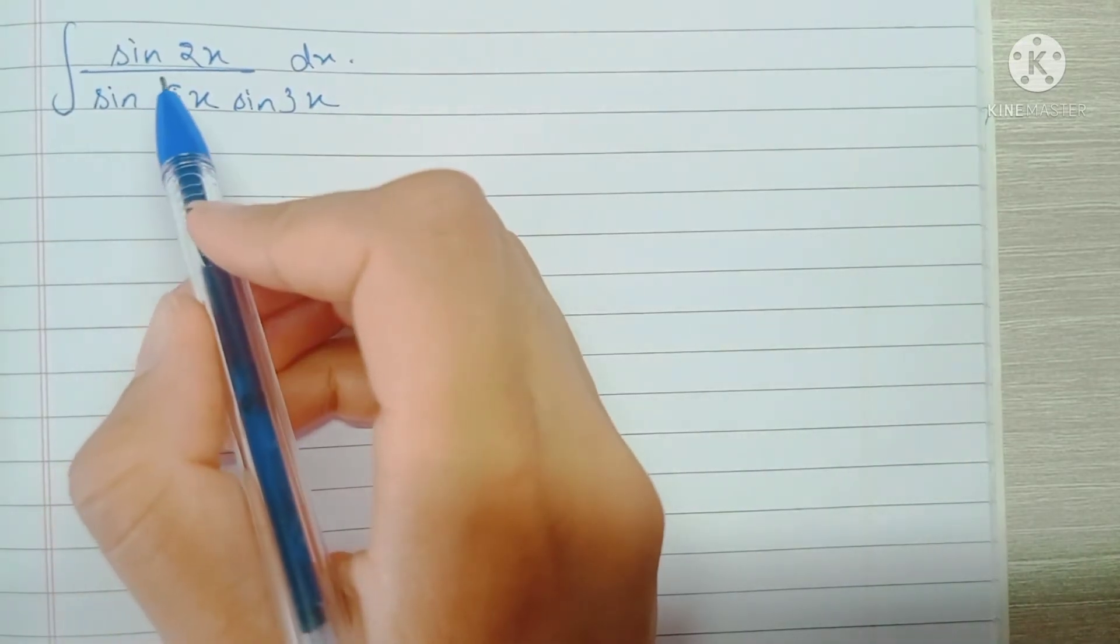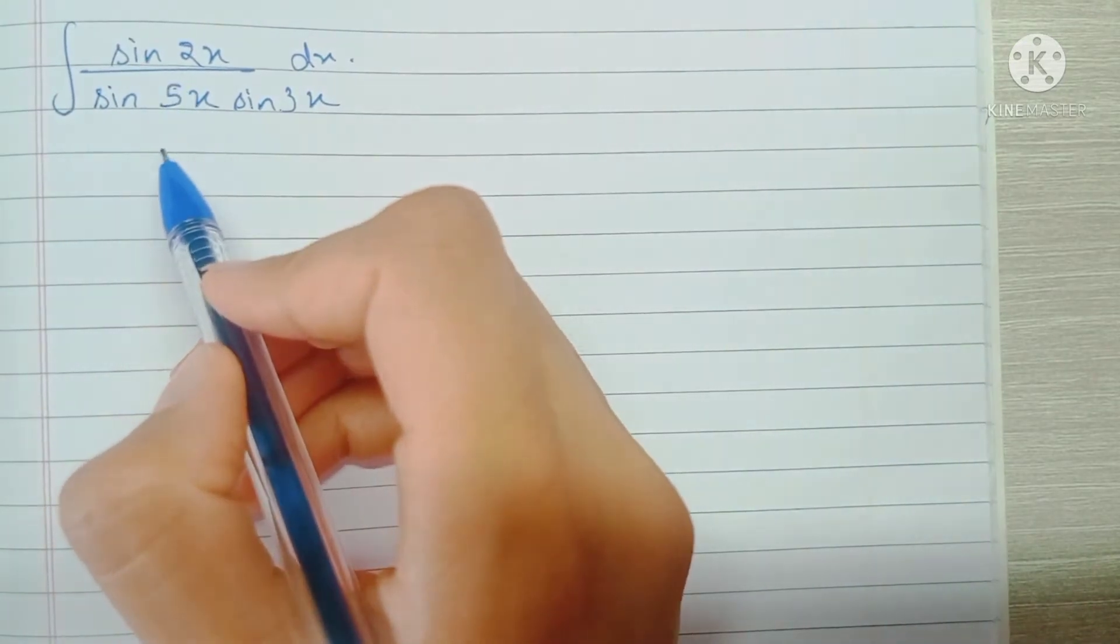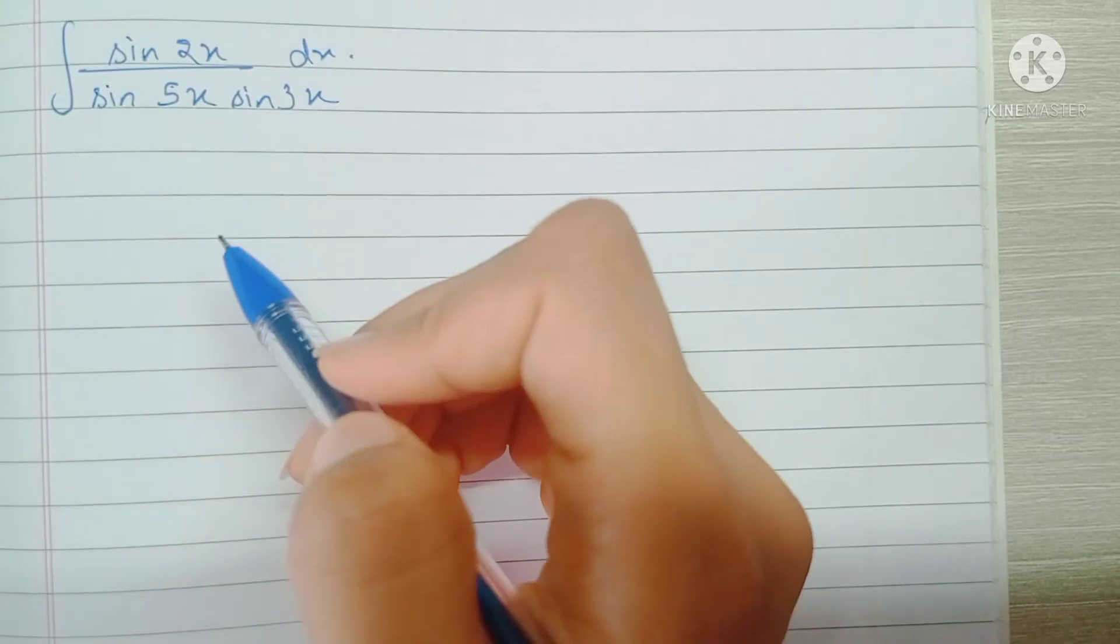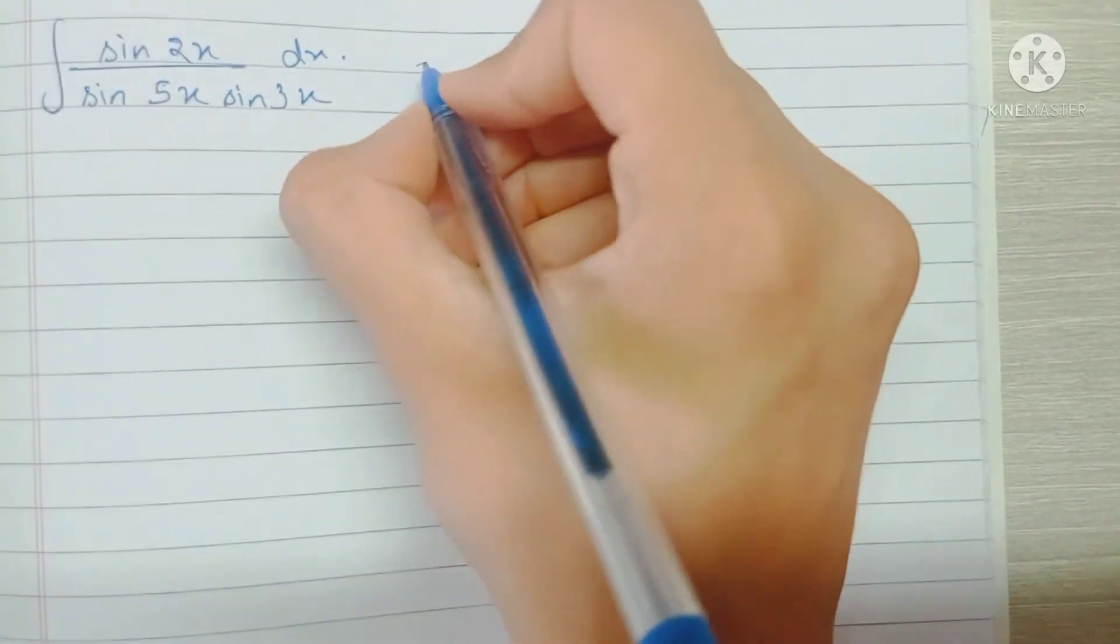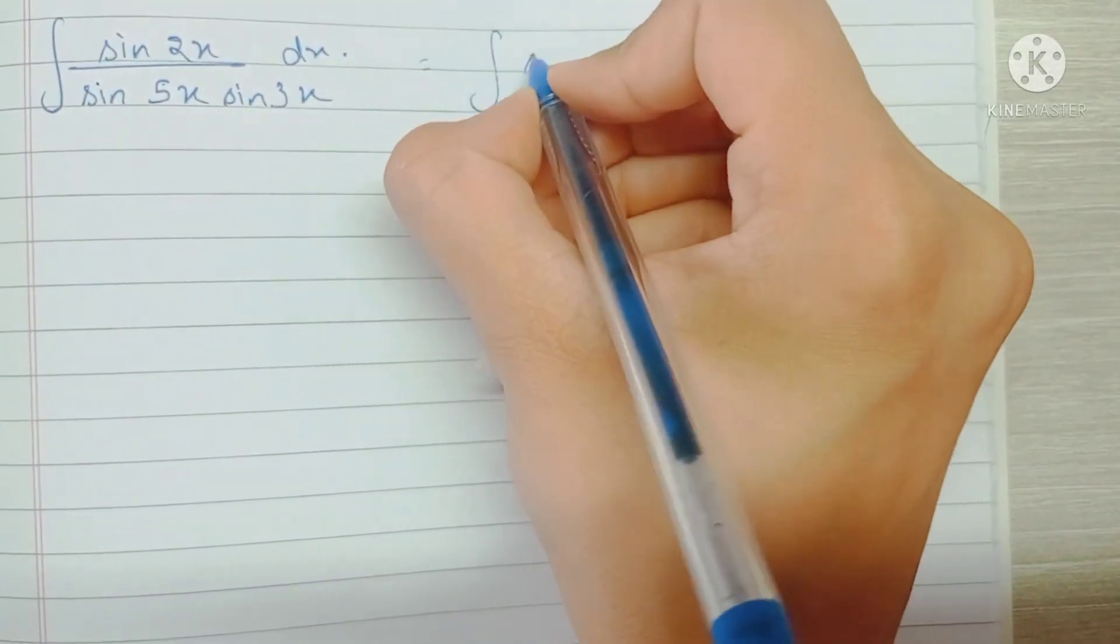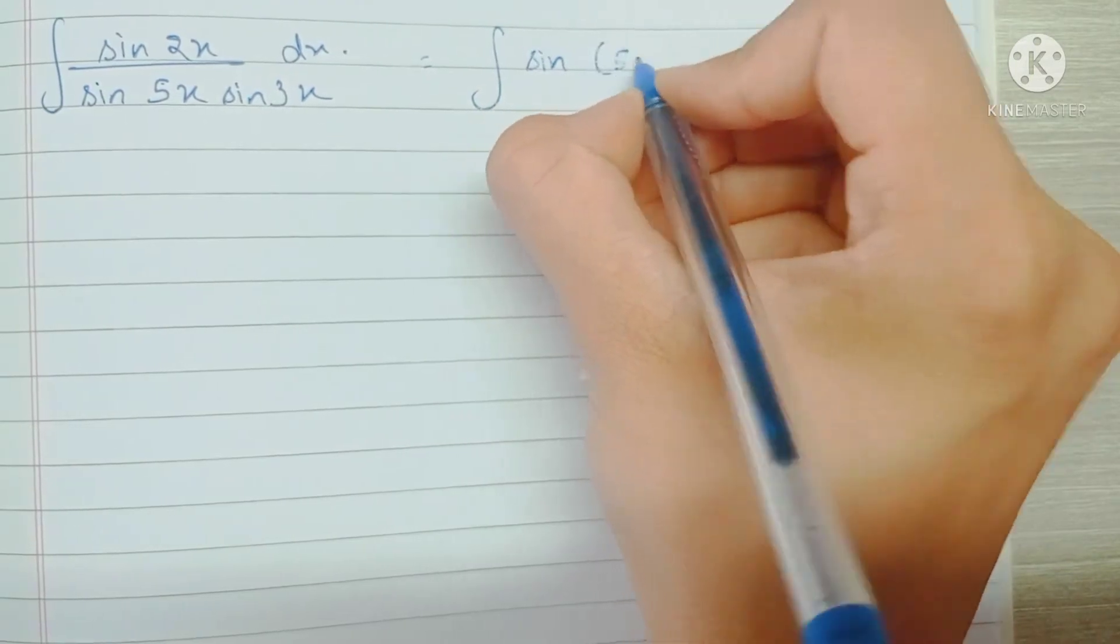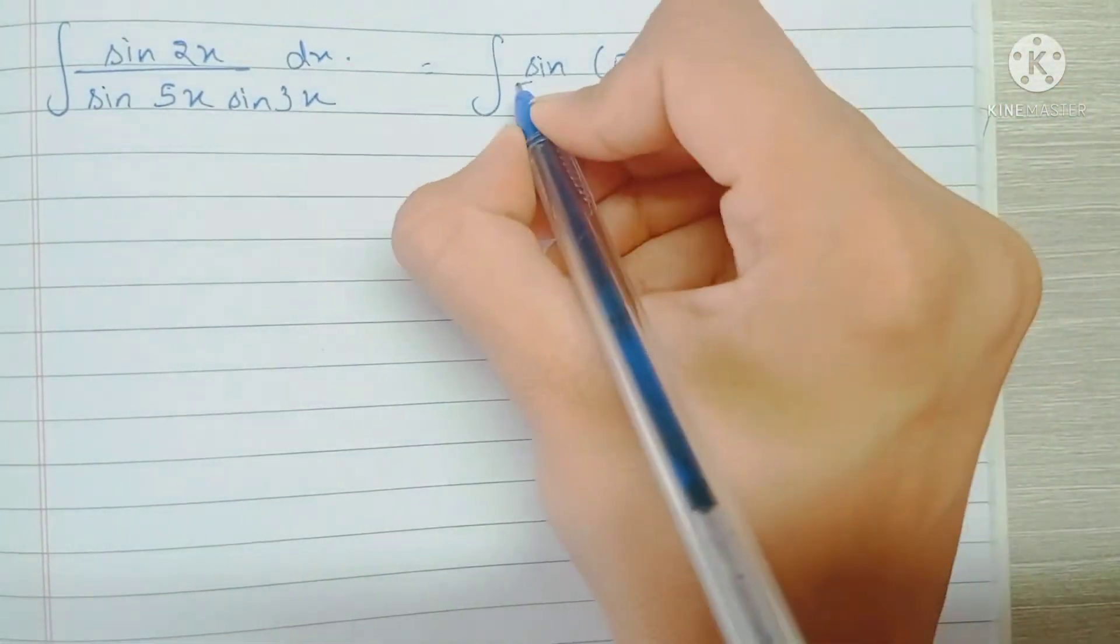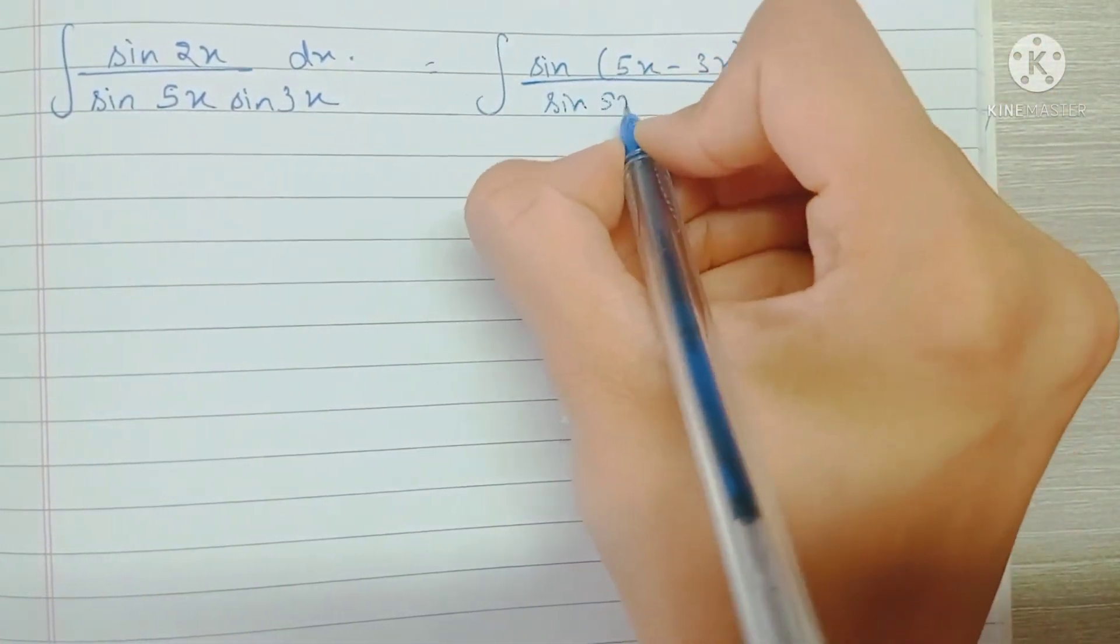Hey guys, welcome back to my channel. Today we'll be solving this question: the integral of sine 2x upon sine 5x into sine 3x dx. So first of all, we're going to be writing the numerator as sine 5x minus 3x. The denominator remains the same.